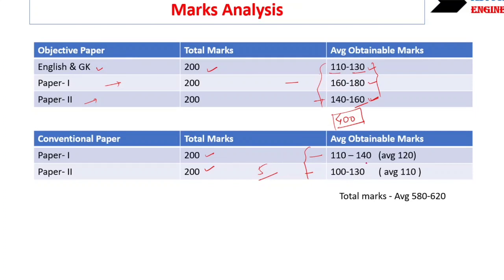So this is a rough estimate. If we count this together, on an average the total marks comes to 580 to 620. A good student in mechanical engineering can score around this much.